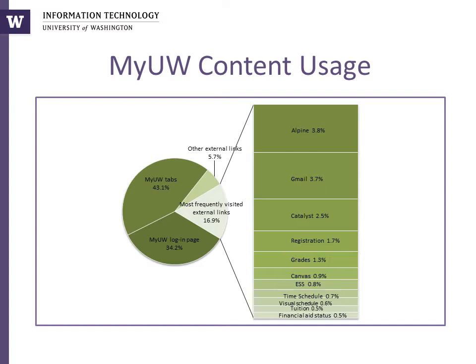The content students seek is personal, not generic, and most importantly, timely information. This information, in combination with the experience of information overload which students describe during user research, suggests that much external content currently linked to on MyUW is distracting, offers questionable value, and makes it difficult for students to find the key information that they seek.